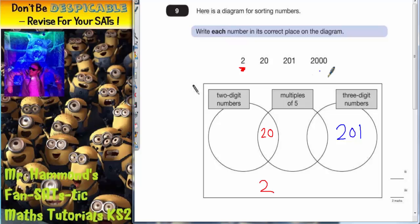The number 2000. Is it a 2 digit number? No. Is it a multiple of 5? Yes because it ends in a 0 so it is a multiple of 5. Is it a 3 digit number? No because this actually has 4 digits.